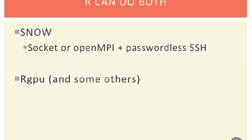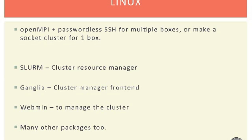R can use both types of parallelization. The Snow package will create socket clusters or OpenMPI clusters, and RGPU and other packages can do GPU computing. Linux is a great place to start with parallel computing. You can use OpenMPI and passwordless SSH for multiple boxes, or you can just do a socket cluster on one box. Slurm, Ganglia, Webmin, and many other packages exist to make Linux cluster computing easy.